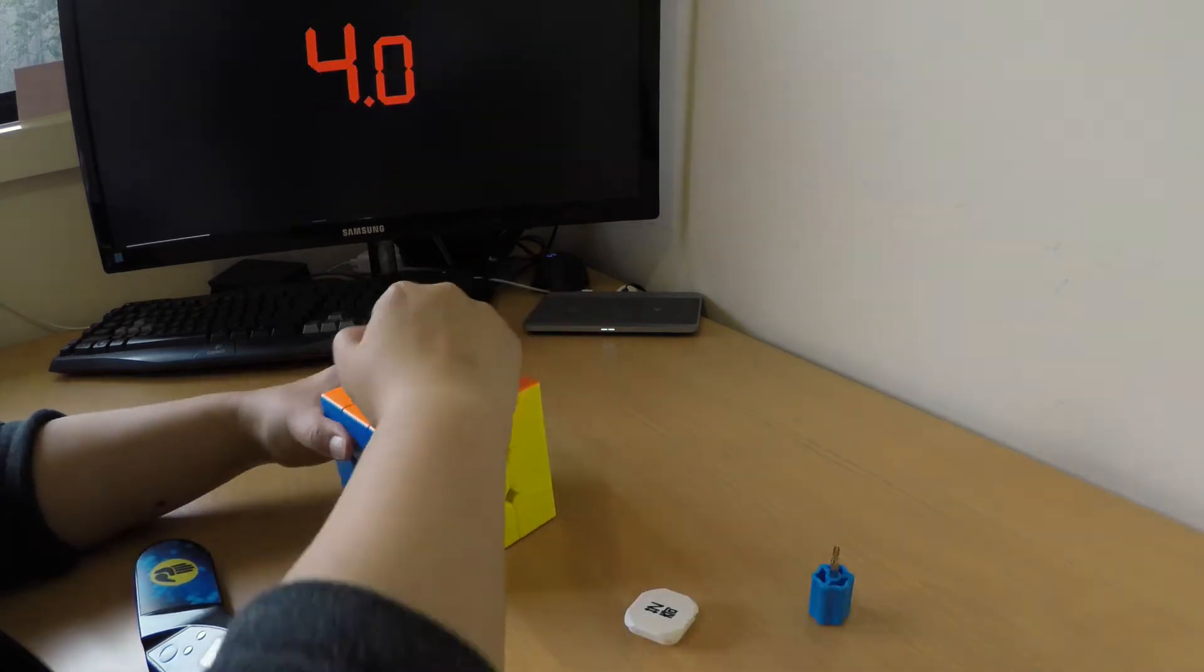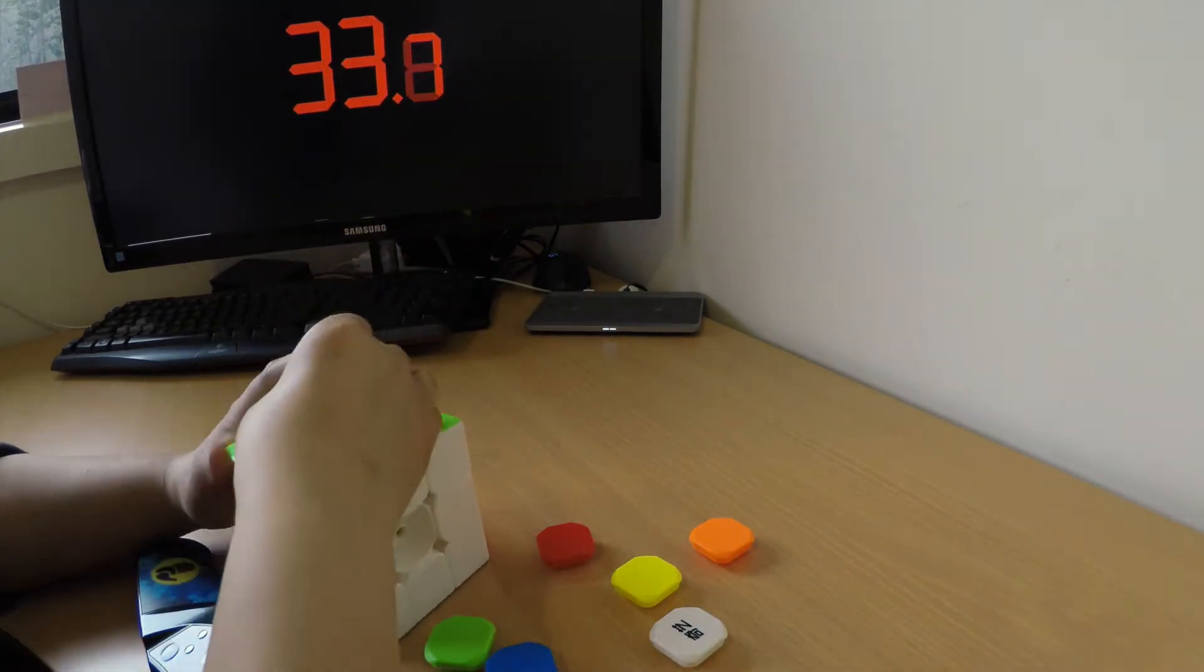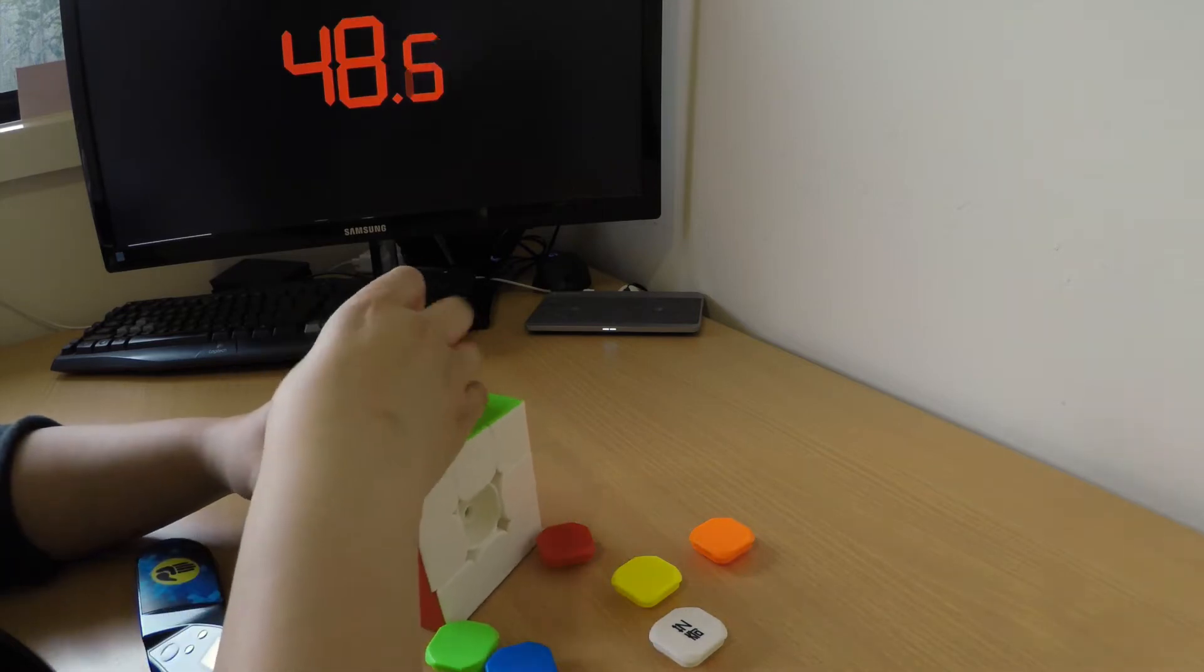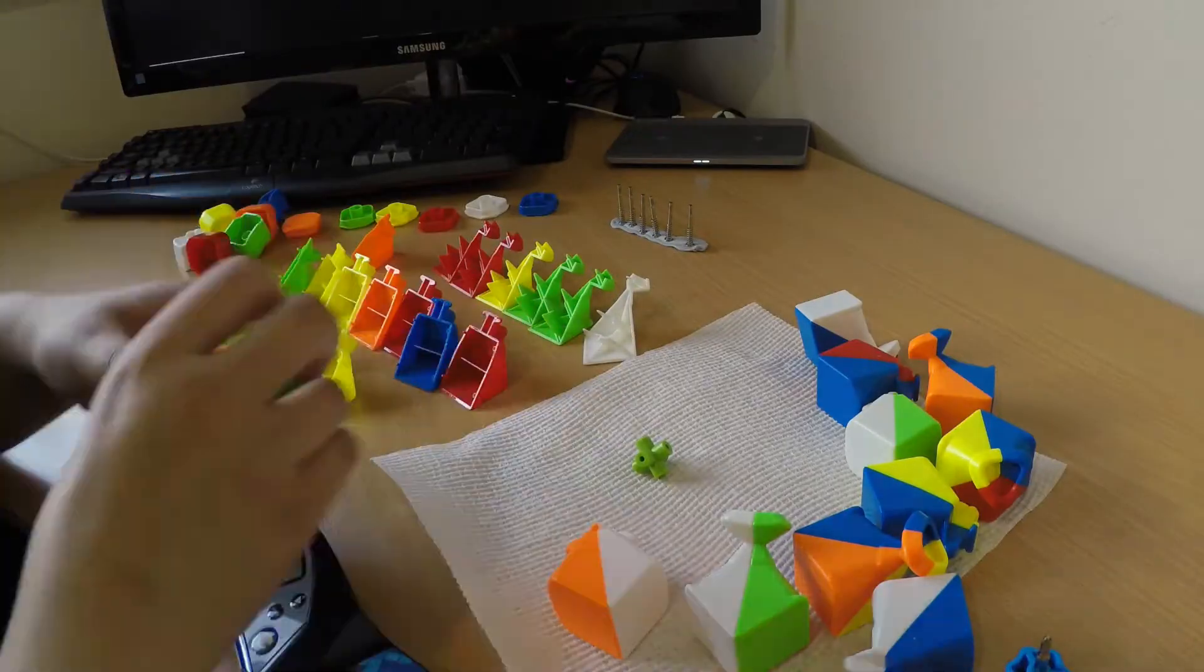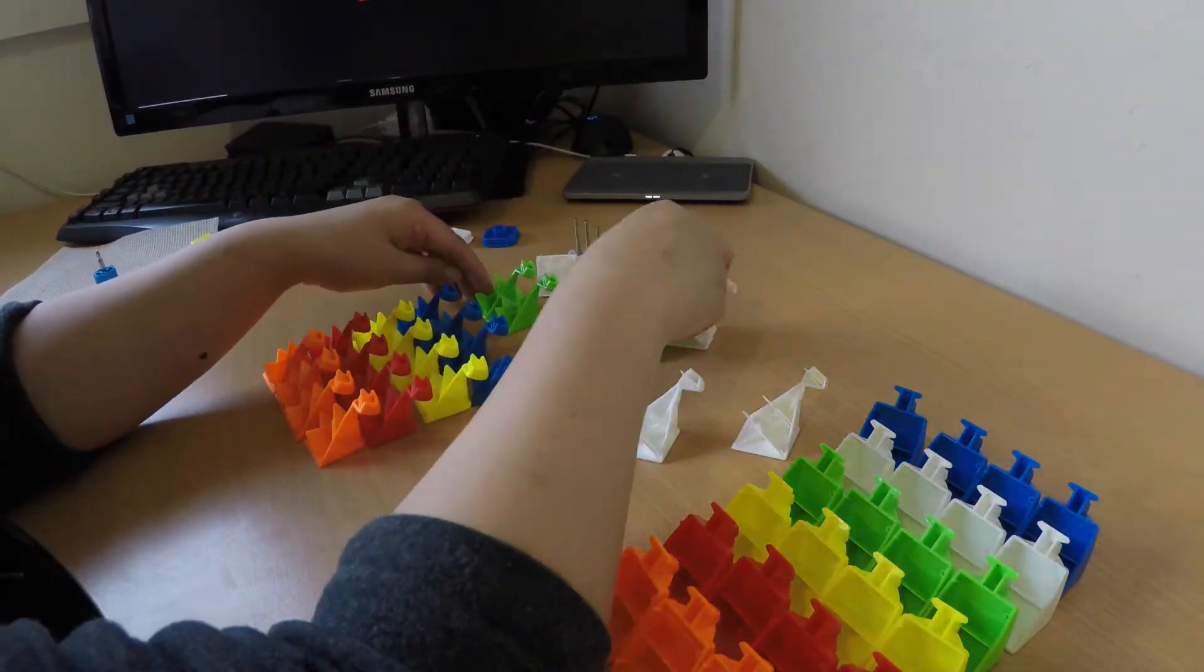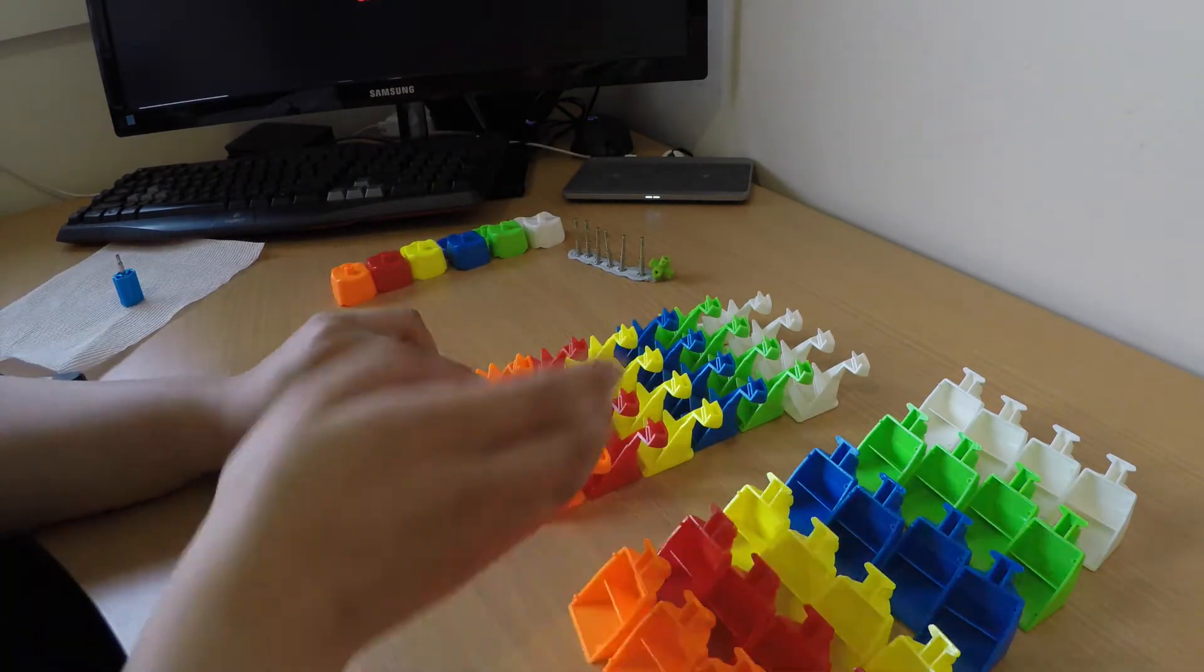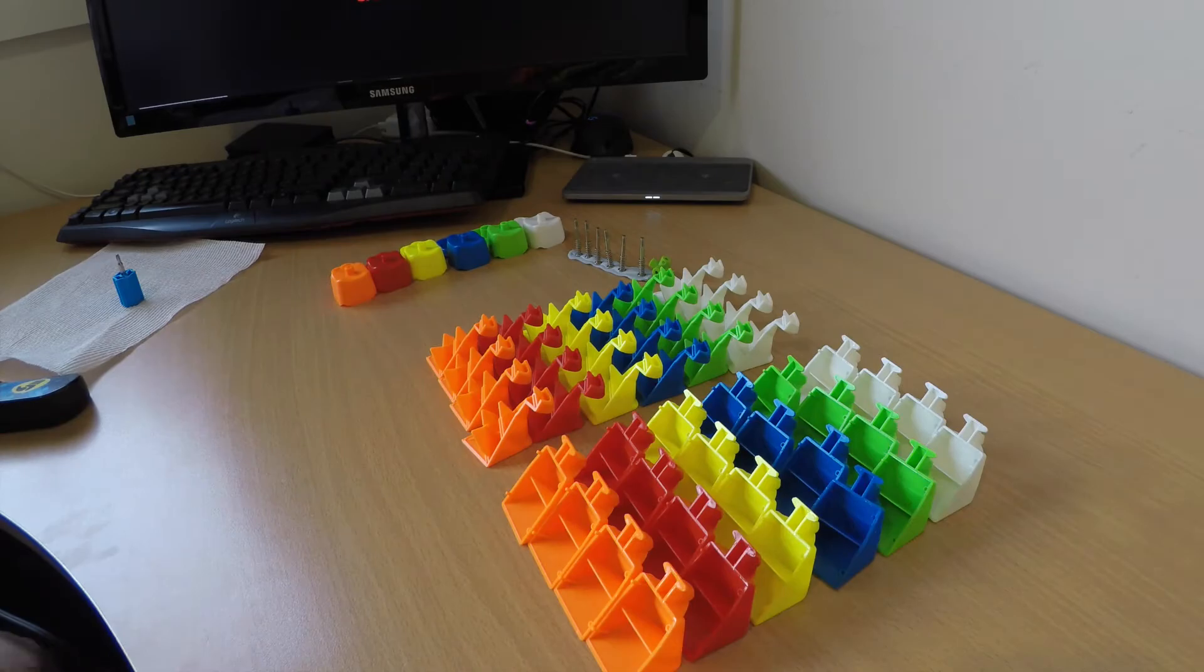So the first step here is to take apart your cube. Start by removing the center caps from all sides and then you'll need a small screwdriver to unscrew each of these center screws and take your cube apart. Pull apart each of the edge and corner pieces into the parts that make them up and if you're like me you'll then arrange them into colors. I've also placed the screws on blue tack so that I don't lose them.